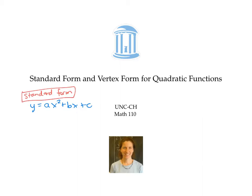A quadratic function in vertex form looks like y equals a times x minus h squared plus k, where a, h, and k are real numbers and a is not zero. When a function is in vertex form, it's easy to read off the vertex. It's just the ordered pair h, k.